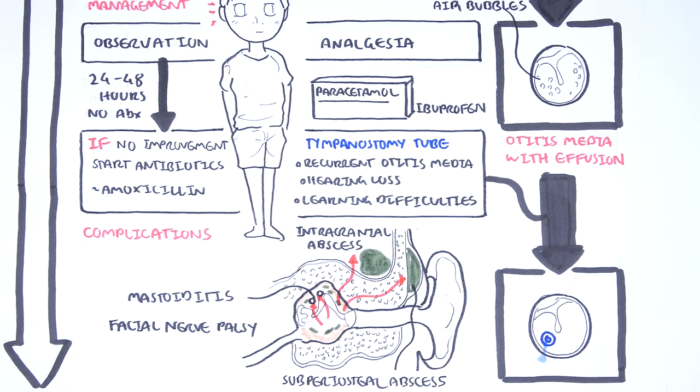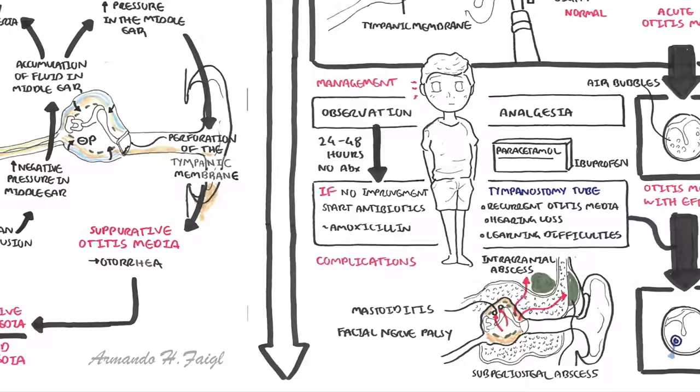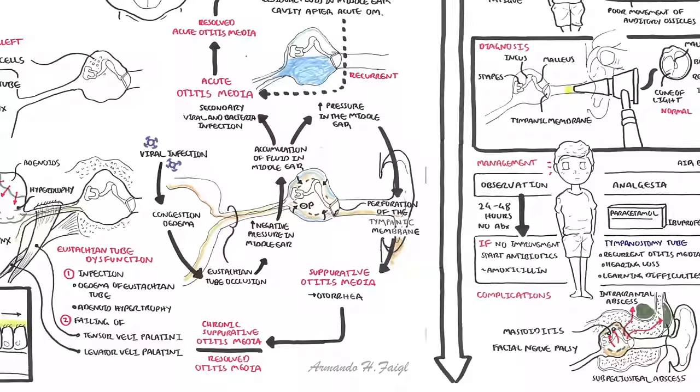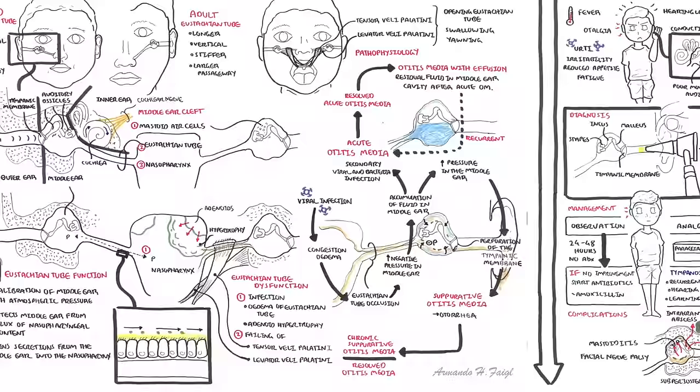Adults can also present with acute otitis media, and treatment is roughly the same. Remember, acute otitis media is a very common problem in children. The majority of children will be diagnosed with at least one episode of otitis media. Management actually relies on a period of observation first, typically 24 to 48 hours before commencing antibiotics. Thank you for watching.